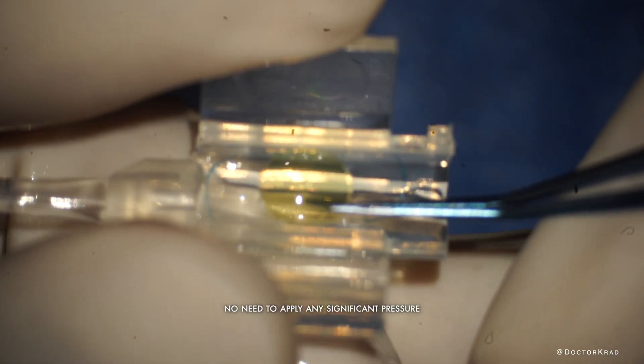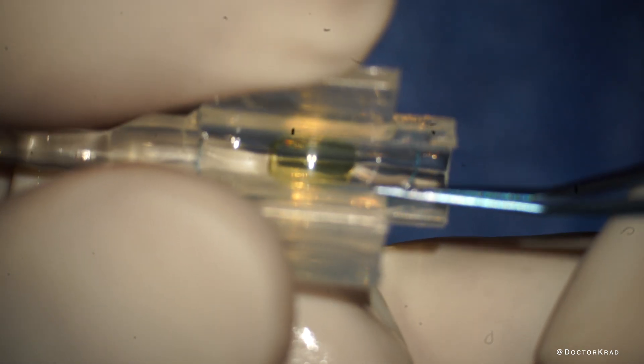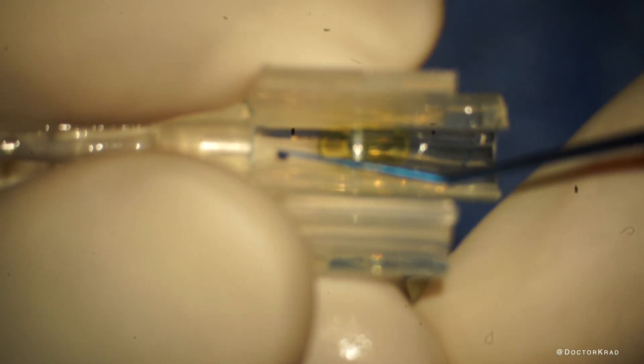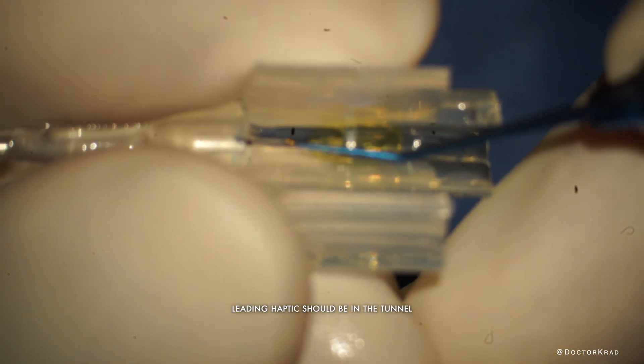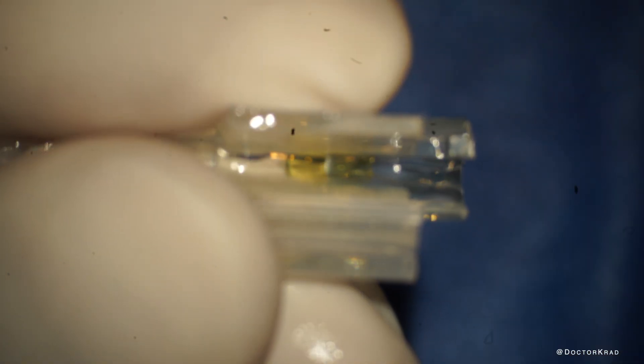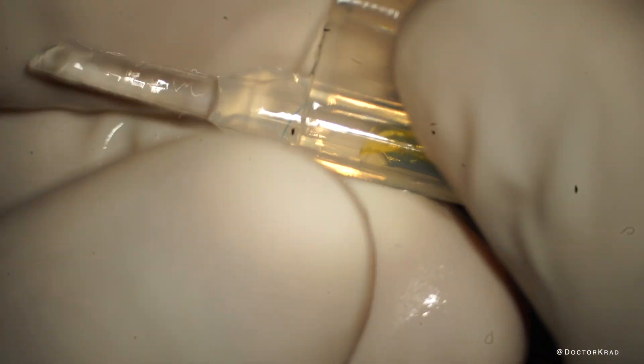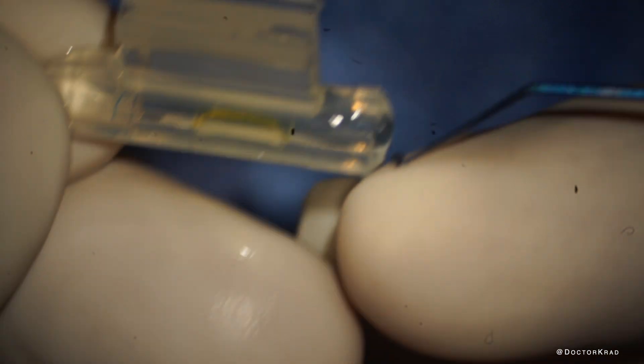You don't have to press down on the lens but you can put an instrument to inhibit it from floating up. As you fold the wings of the cartridge halfway, the lens will be locked in position. And then you want to make sure that the leading haptic goes into the tunnel of the cartridge. So as you snap it closed, make sure that the leading haptic is in the tunnel and it's not trapped or kinked.